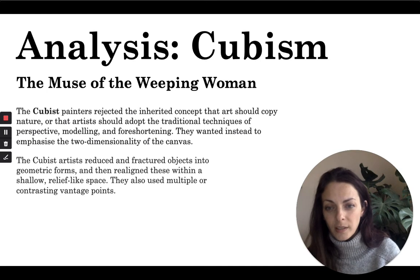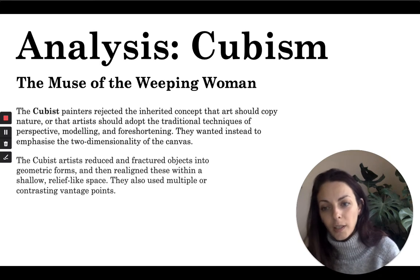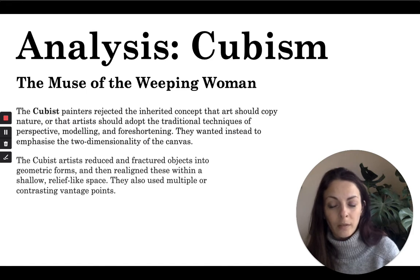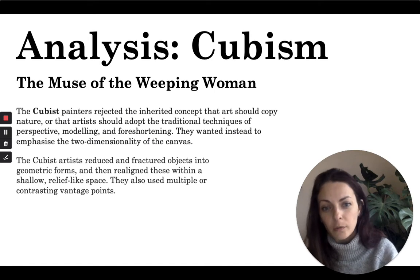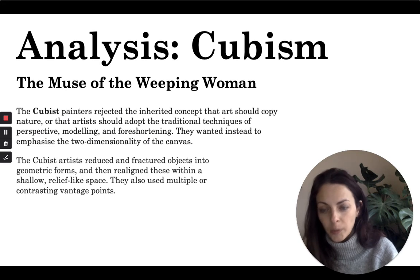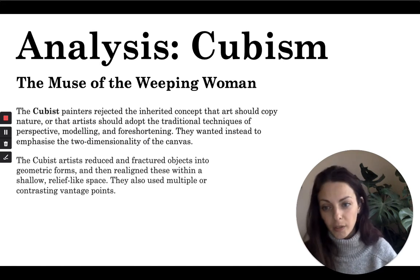They wanted instead to emphasise the two-dimensionality of the canvas, and even when working in sculptural forms, they wanted to look at as many different aspects of the same object or person as possible within one essential image. Cubist artists reduced and fractured objects into geometric forms and realigned these within a shallow, relief-like space, using multiple or contrasting vantage points — an idea of simultaneity where things are simultaneously represented within a single space.